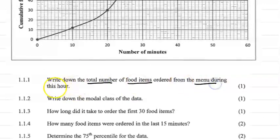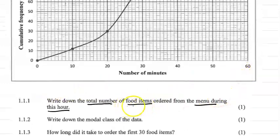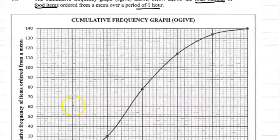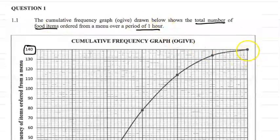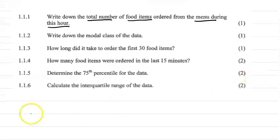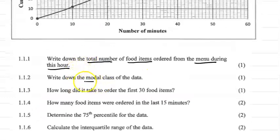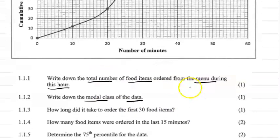The first question says: write down the total number of food items ordered from the menu during this hour. The total number of food items ordered will be the sum of all your frequencies, which will be 140. So the answer to 1.1.1 is 140 food items.